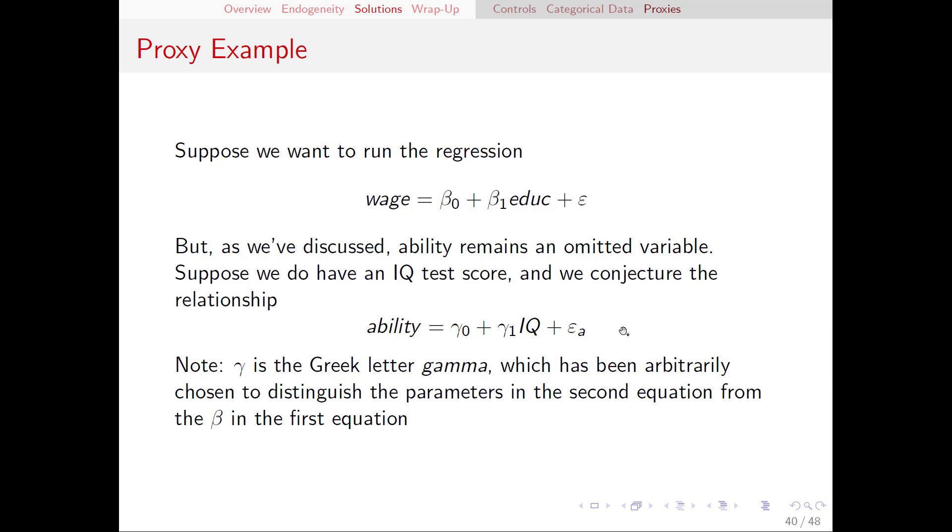We might think about IQ kind of as a book smart measure, but that's not the only part of ability that's out there. And what exactly ability means for you is dependent on the job that you're trying to do. So epsilon might have things like emotional intelligence, it could be physical strength, it could be all kinds of things that are not part of IQ.